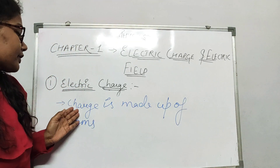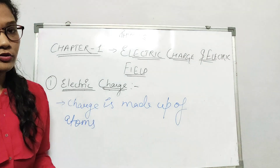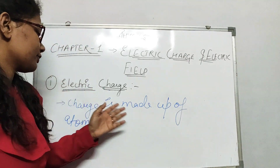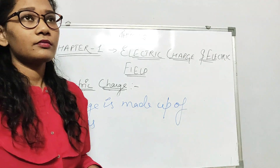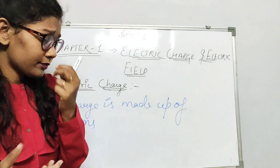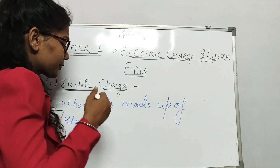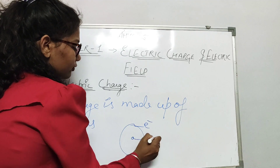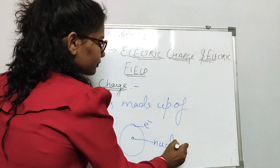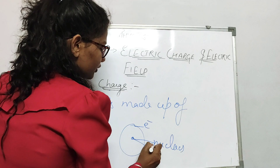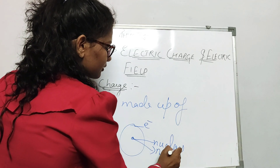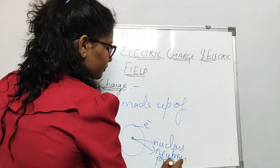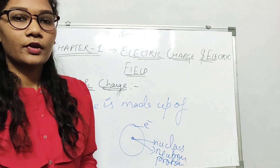We can say that charge is made up of atoms — atoms like electron, nucleus, neutron, and proton.